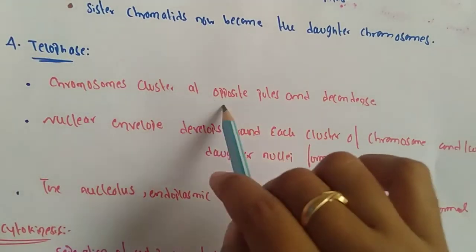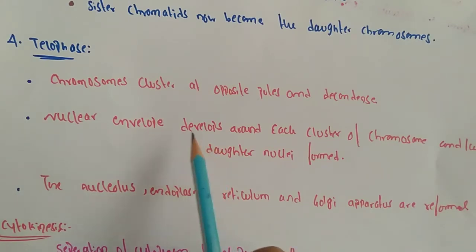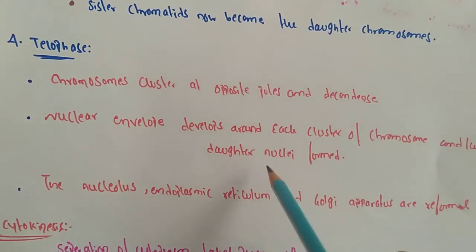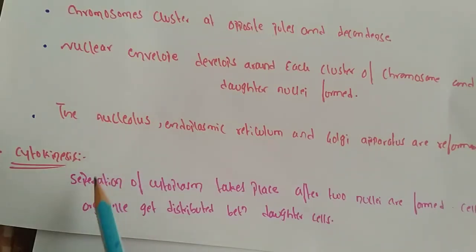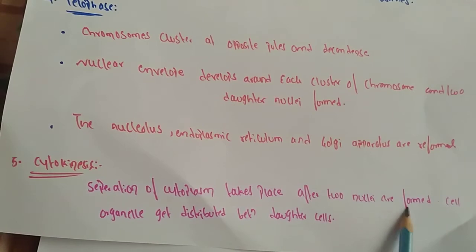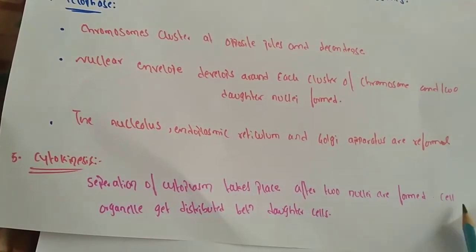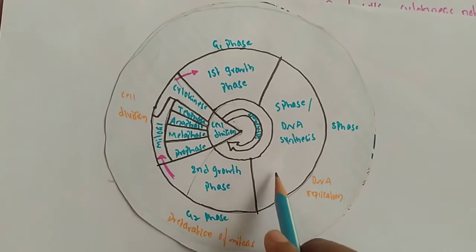In telophase, chromosomes cluster at opposite poles and decondense. A nuclear envelope develops around each cluster of chromosomes, forming two daughter nuclei. The nucleolus, endoplasmic reticulum, and Golgi apparatus are reformed. Cytokinesis then follows — the cytoplasm separates after the two nuclei are formed, and cell organelles get distributed between the two daughter cells.